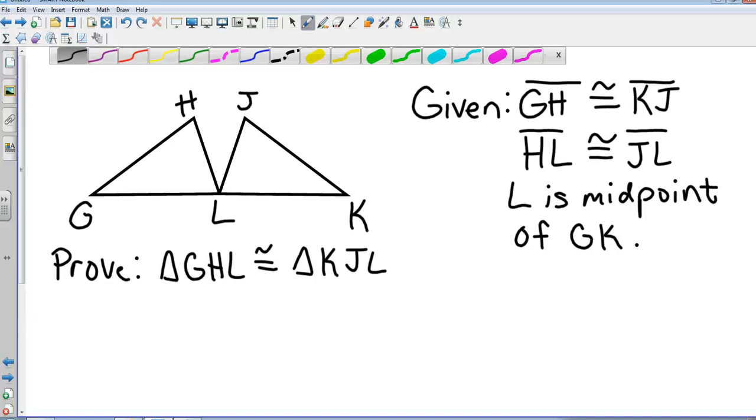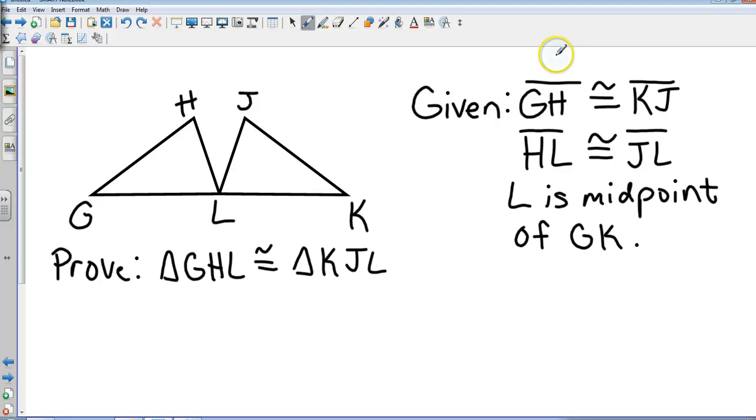This is example one on page 262. We're going to try to prove that triangle GHL is congruent to triangle KJL by the given statement. I know that GH is congruent to KJ, so I'm going to put congruent signs on them. HL is congruent to JL, so I'm going to put two congruent marks on those. It doesn't say they're congruent to the other ones, just means they're congruent to each other.